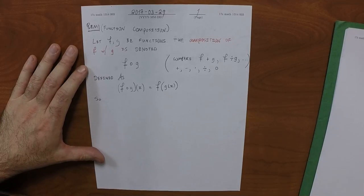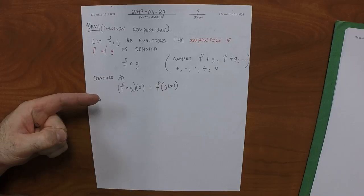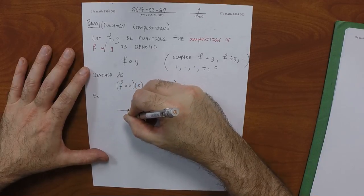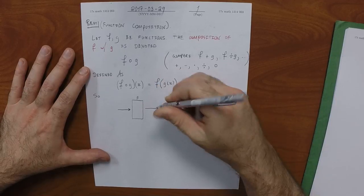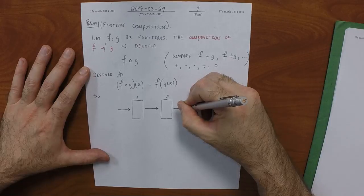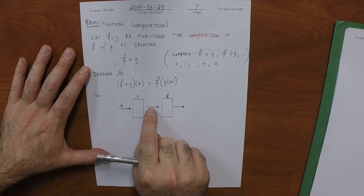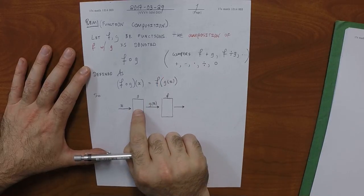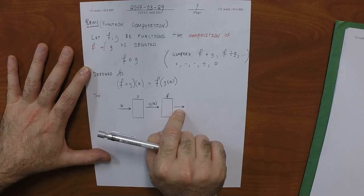Sticking with the mental model of a function being a machine, this represents an assembly line. We've got a piece of assembly line running into the G machine, and then the output comes out and runs into the F machine, and then output comes out. Supposing we put an X in — what comes out after the G machine? G of X. And then the output of G of X is used as the input to F. So what comes out? F of G of X.